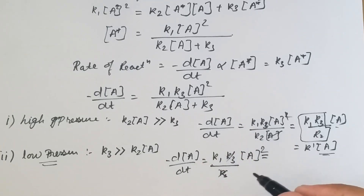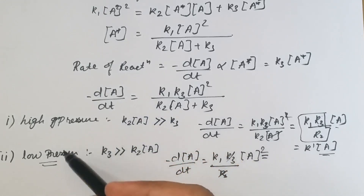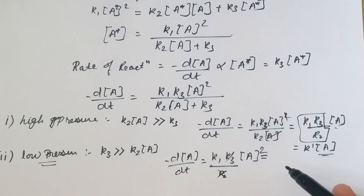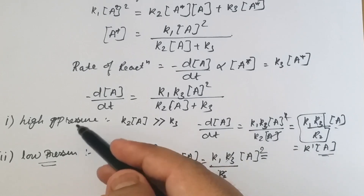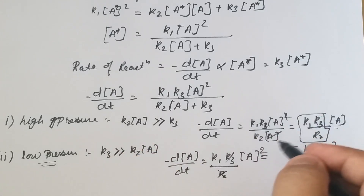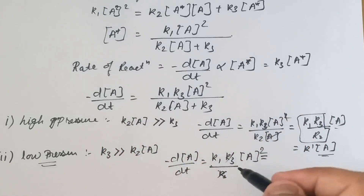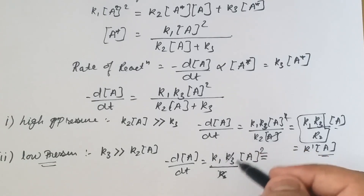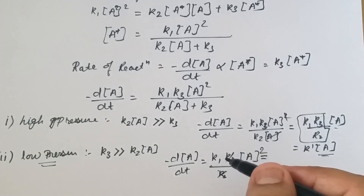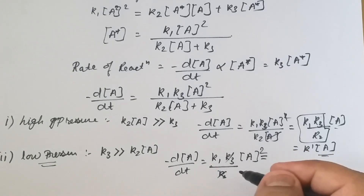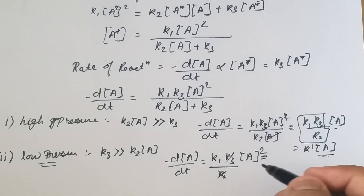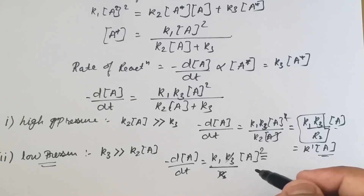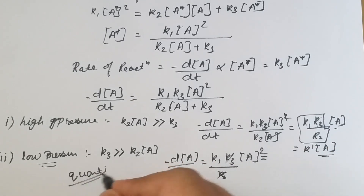According to Lindemann theory, the change from first order to second order kinetics occurs as the pressure is lowered. When pressure is decreased, the order changes from first to second, and this has been proved experimentally in several cases. This theory holds well for most reactions and gives a satisfactory qualitative interpretation of unimolecular reactions, but it fails to give satisfactory quantitative aspects.